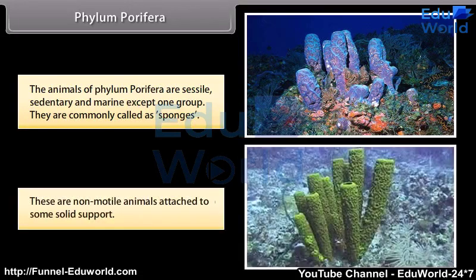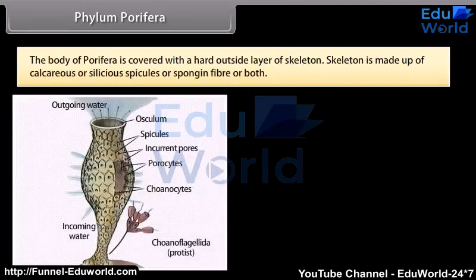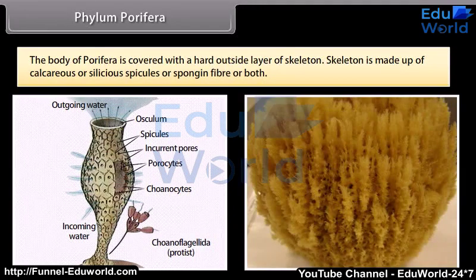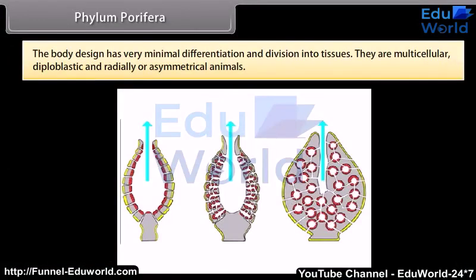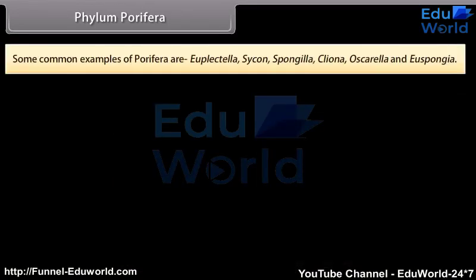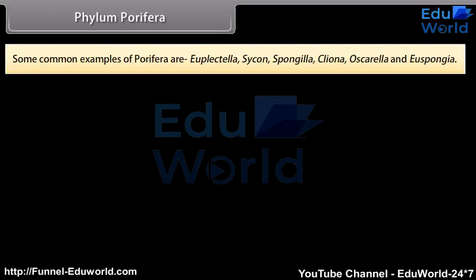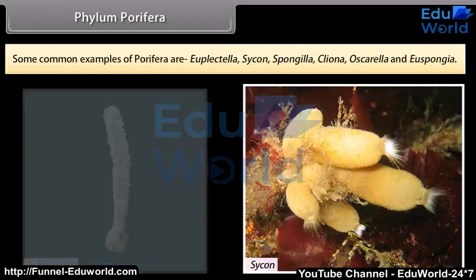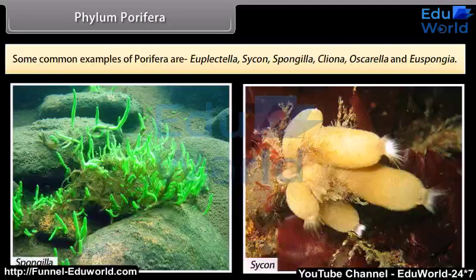These are non-motile animals attached to some solid support. The body of Porifera is covered with a hard outside layer of skeleton. Skeleton is made up of calcareous or siliceous spicules or spongin fiber or both. The body design has very minimal differentiation and division into tissues. They are multicellular, diploblastic, and radially or asymmetrical animals. Some common examples of Porifera are Euplectella, Sycon, Spongilla, Cliona, Oscarella, and Euspongia.